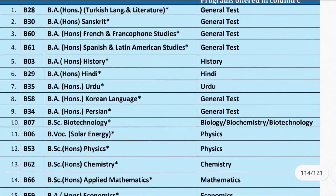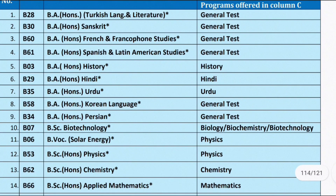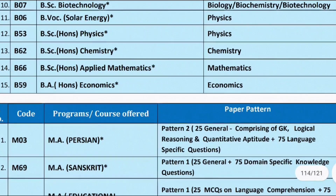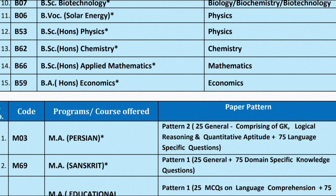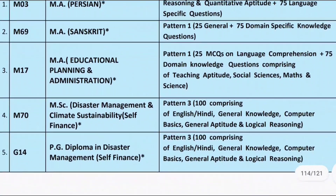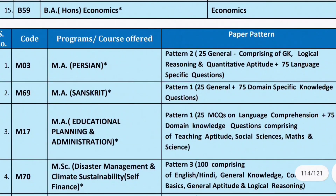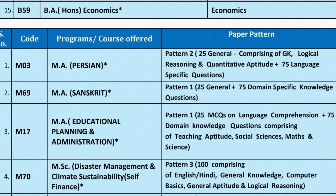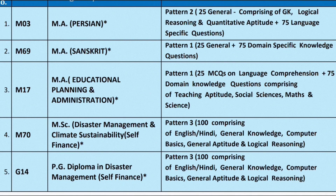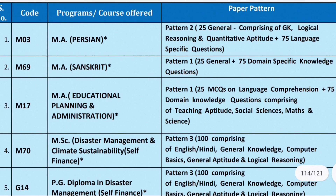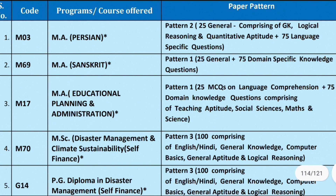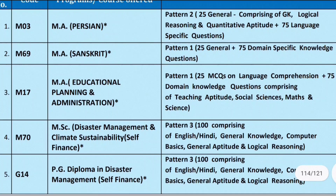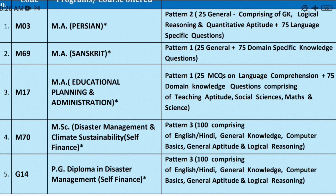So in total, 15 UG courses will have admission through CUET. After that, we will talk about PG courses. There are around 3 to 4 PG courses. If you want MA Persian, MA Sanskrit, MA Educational Planning and Administration, or MSc Disaster Management, as well as PG Diploma in Disaster Management — admission to all these courses will also be through CUET.